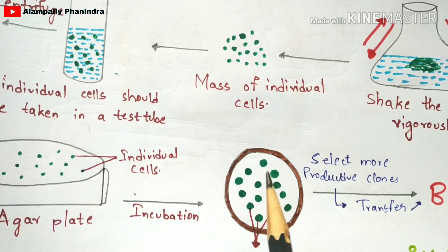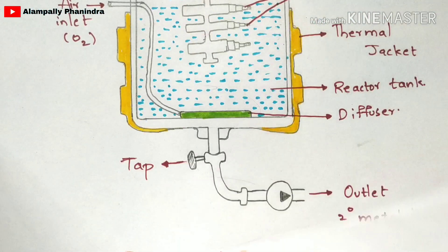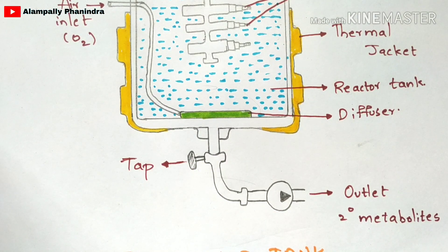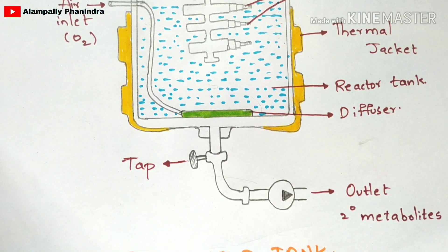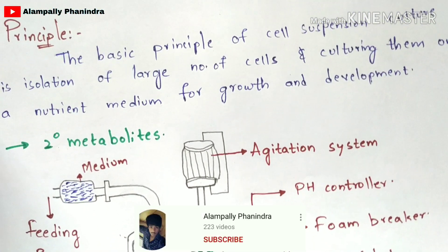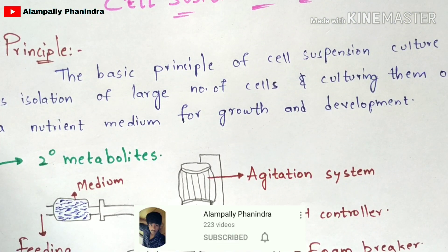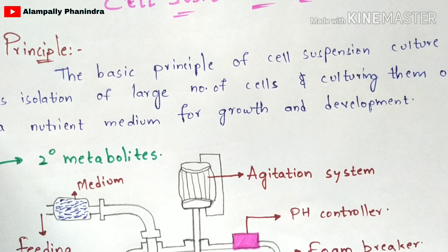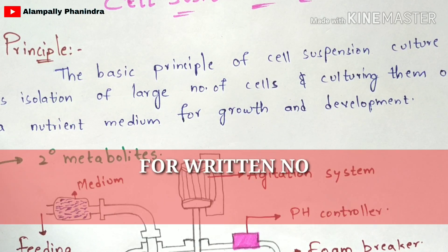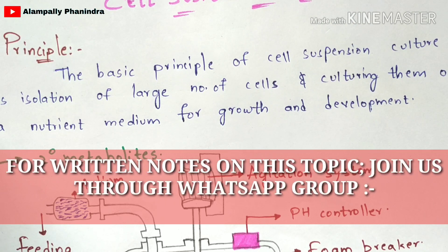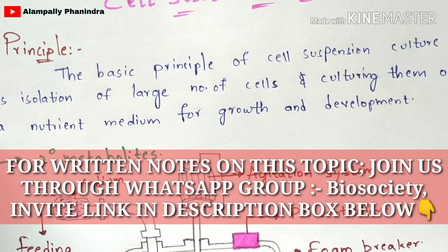This covers cell suspension culture. It is of two types — batch culture and continuous culture — which will be explained in the next video. Notes for this cell suspension culture will be provided in the WhatsApp group; the invite link is in the description box. The notes will be in written form.